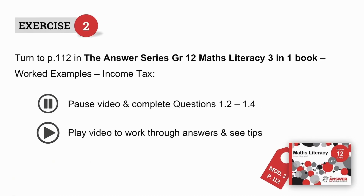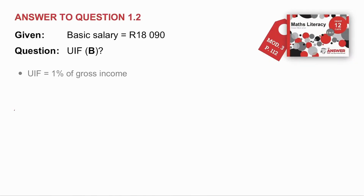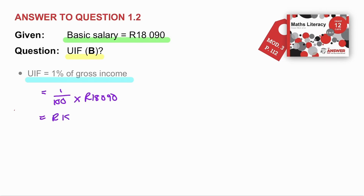Exercise 2: turn to page 112 in the Answer Series Grade 12 Mass Literacy 3-in-1 book, Worked Examples, Income Tax. Pause the video, complete questions 1.2 to 1.4, and when you're ready, play the video to work through the answers and to see tips. In question 1.2, we are given the basic salary and asked to calculate the UIF. UIF is equal to 1% of your gross salary. So, 1% of R18,090 gives a UIF contribution of R180.90 — the answer for B.